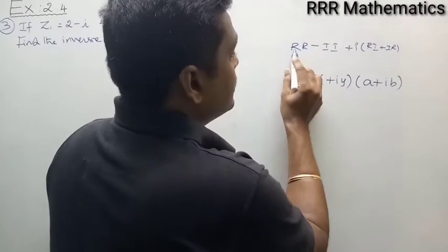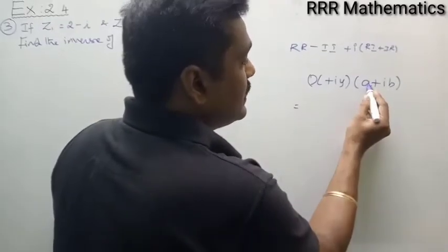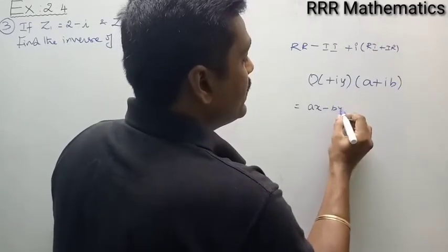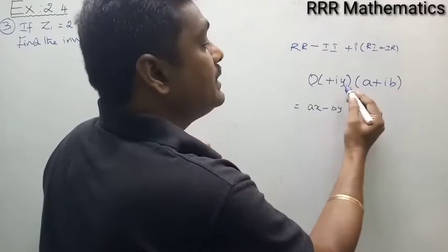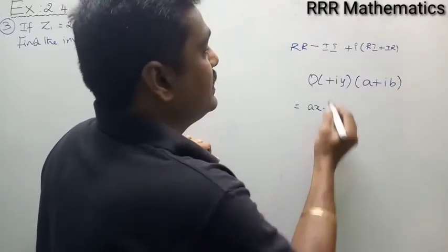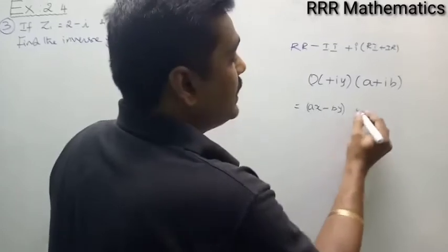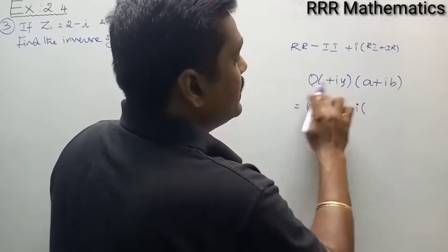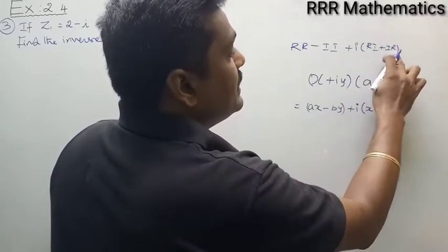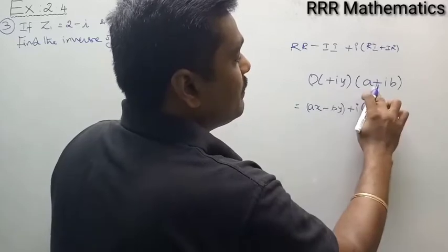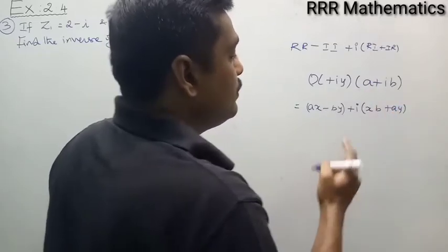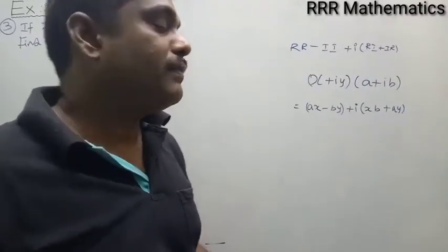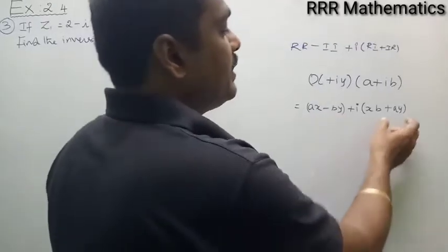I will explain. Real into real, minus imaginary part into imaginary part. Why am I writing minus here? Because i into i is i squared, which gives minus 1 — that's why this minus comes. This is purely the real part. Then plus i times real into imaginary (x into b) and imaginary into real (a into y). So when you do like this, you will get the product of two different complex numbers, and you will get the real part and imaginary part directly.